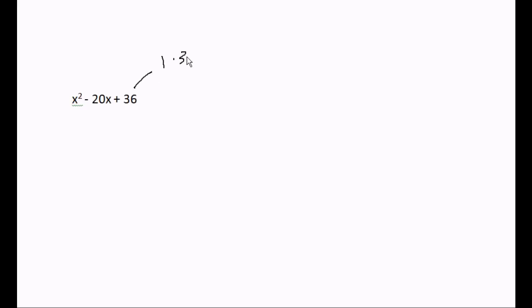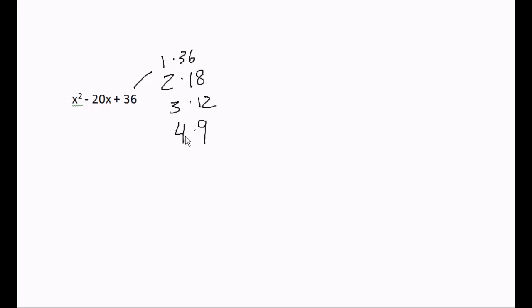x² - 20x + 36. Step one: find all pairs that multiply together to equal thirty-six. One times thirty-six, two times eighteen, three times twelve, four times nine — there sure are a lot of these — and finally six times six equals thirty-six.